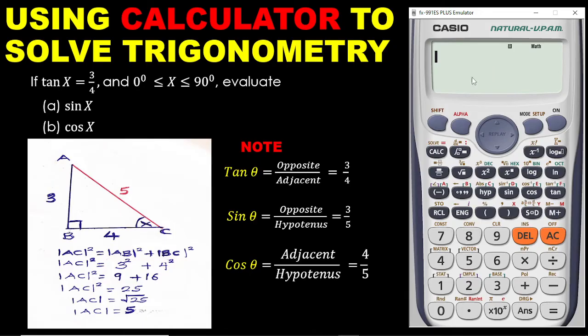And to get tan inverse, you press shift and then you press tan. So, we now have tan inverse here. Now, the question has given us 3 over 4. This is a fraction. So, to enter this fraction, you must click on the fraction button. And on the calculator, this is the fraction button. So, you click on this. We have the fraction. Now, let's enter our 3. Then you go down. You enter 4.